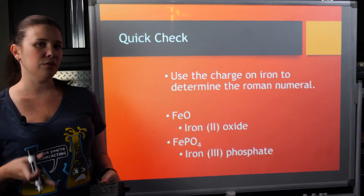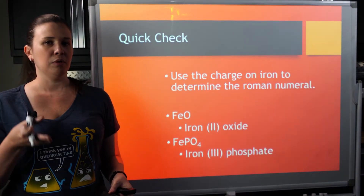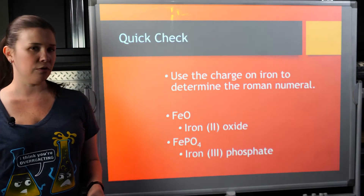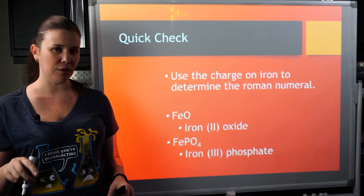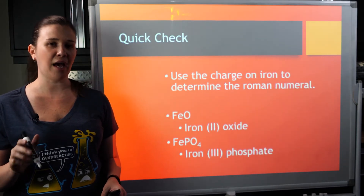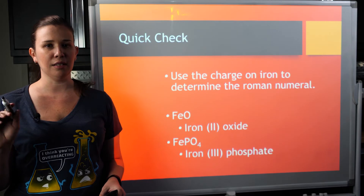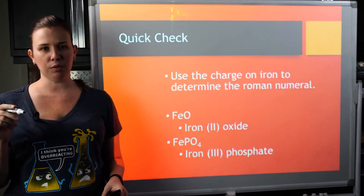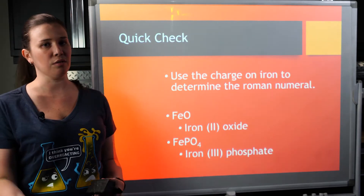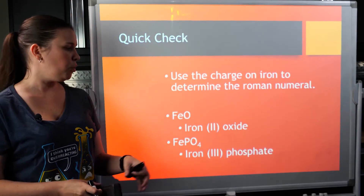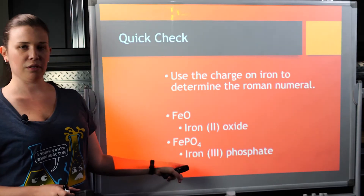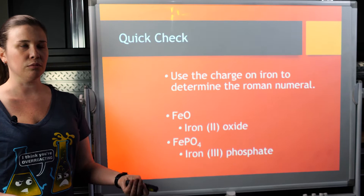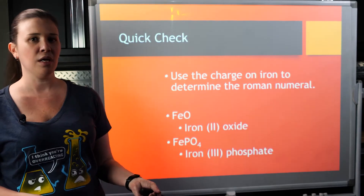To take this one step further — there are three transition metals that have set charges: zinc, cadmium, and silver. Since those three also have set charges, they don't necessarily need Roman numerals. The point of a Roman numeral is to give the charge for something that could have multiple charges. So you'll only need them for most transition metals and tin and lead.